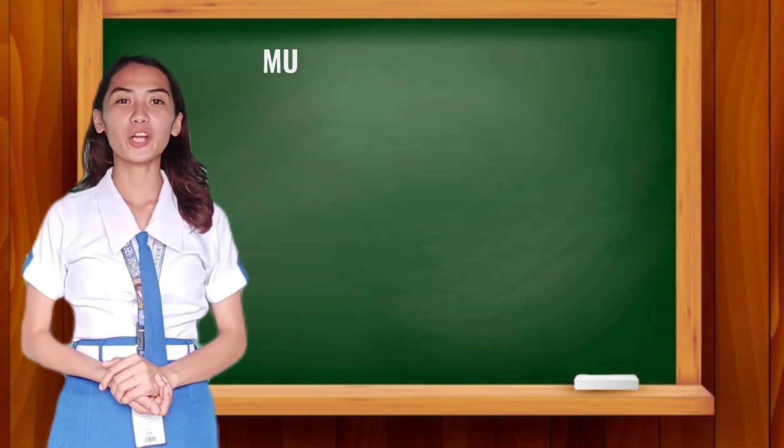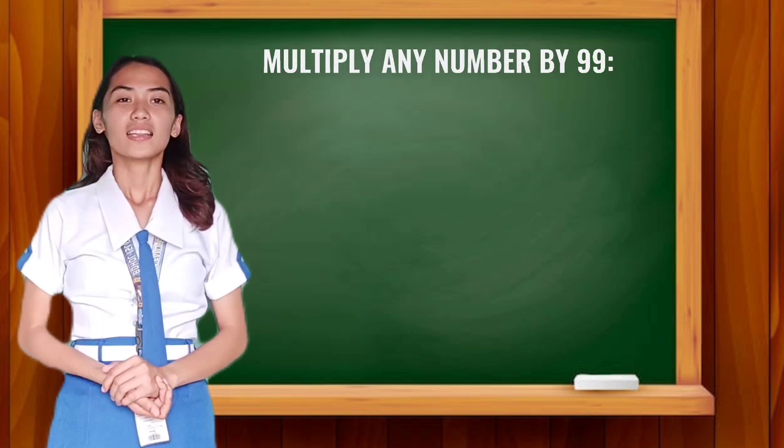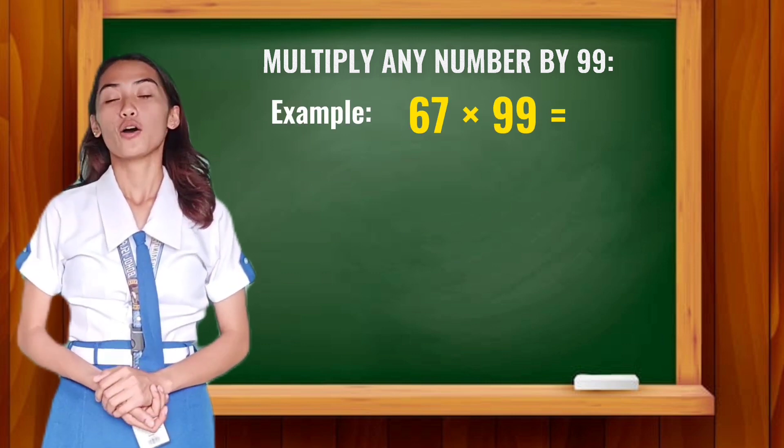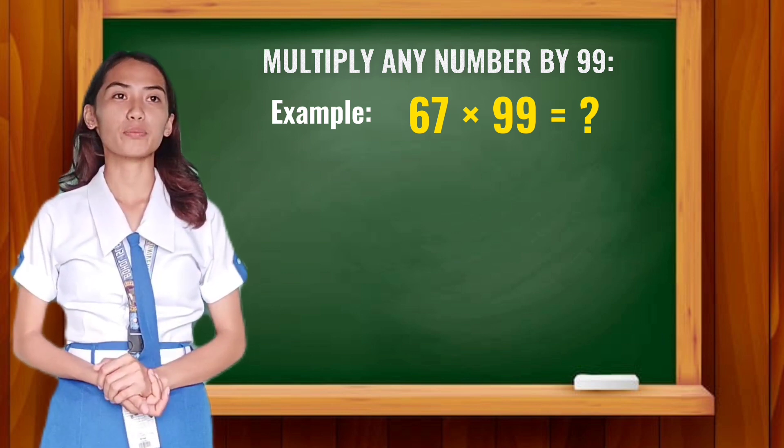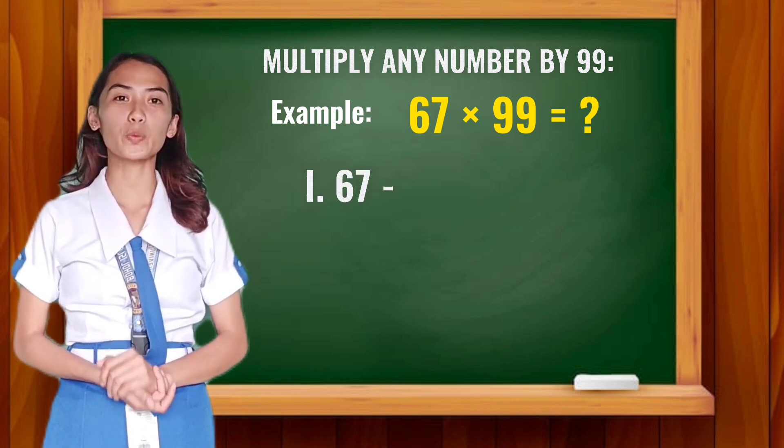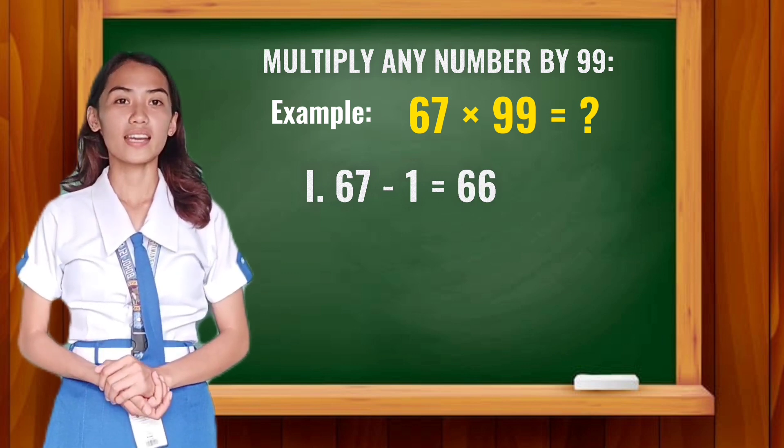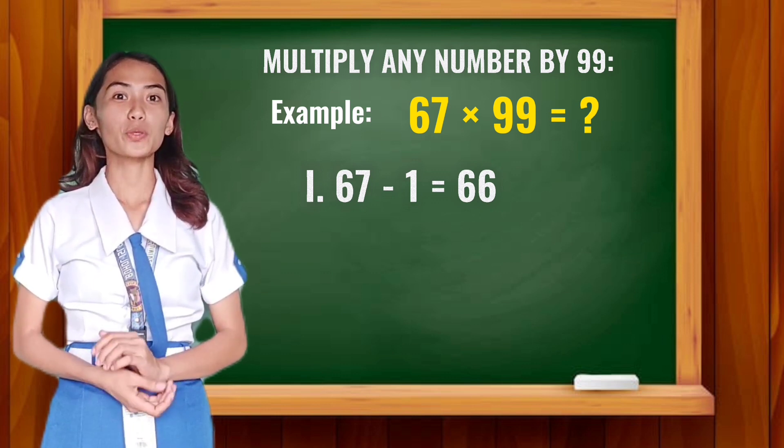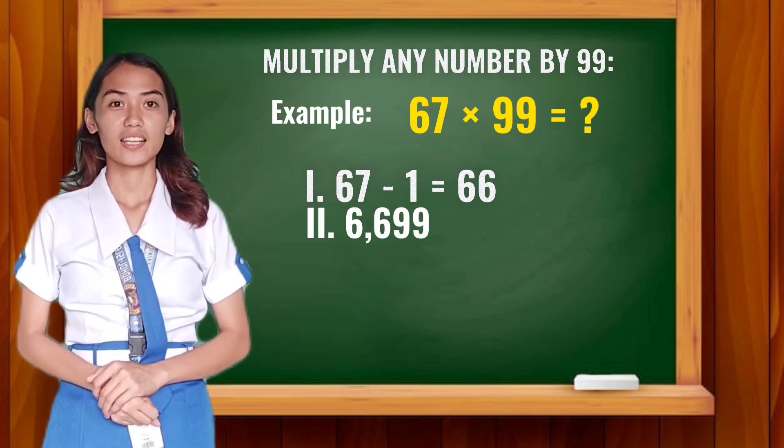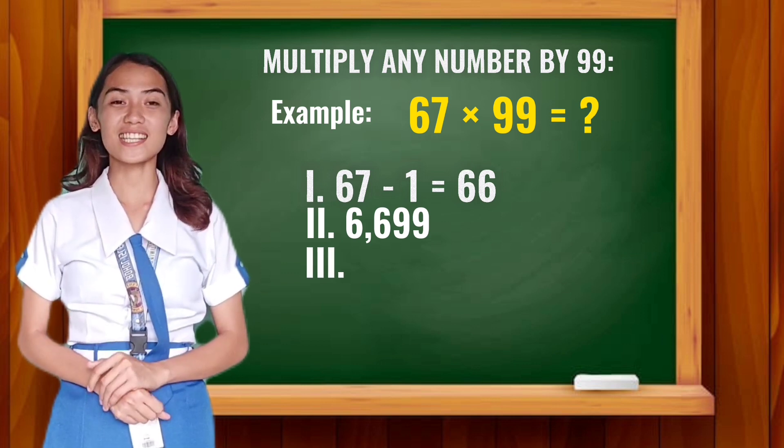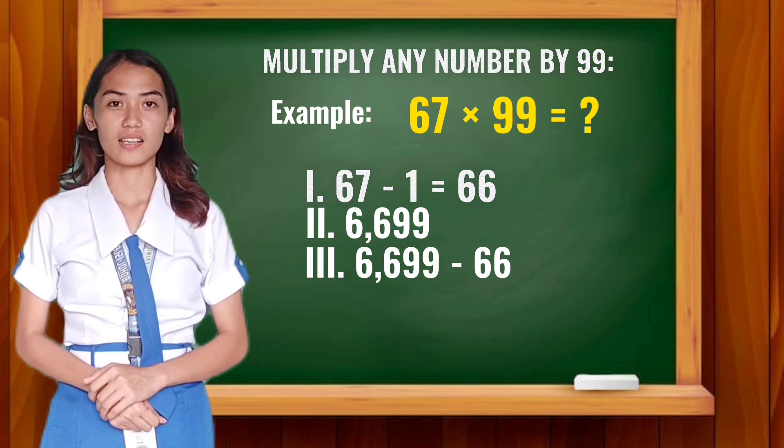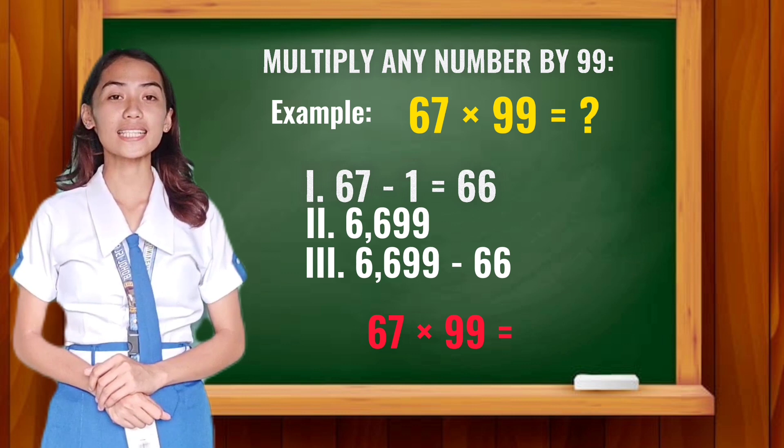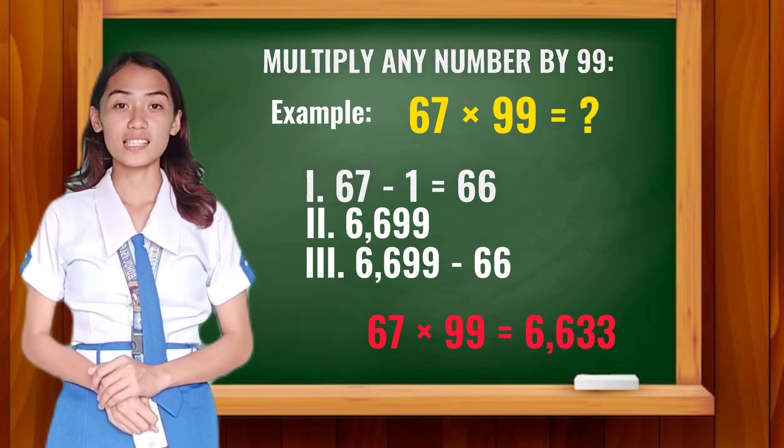Now, we will multiply any number dealing with 99. Let's have some examples doing the same steps. So we have 67 times 99. First step: Subtract 67 by 1. So 67 minus 1 is equal to 66. Next, copy 66 together with 99. It will be 6699. And lastly, subtract 6699 by 66. Therefore, the product of 67 multiplied by 99 is 6633.